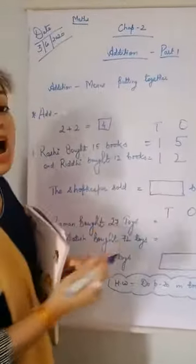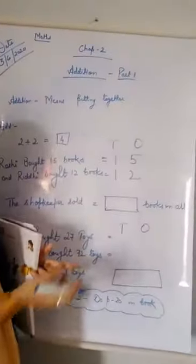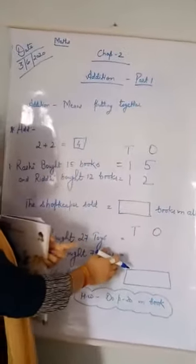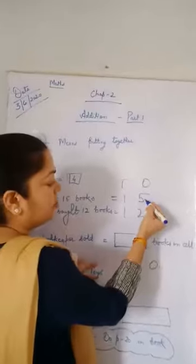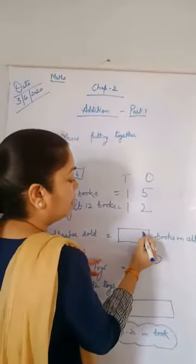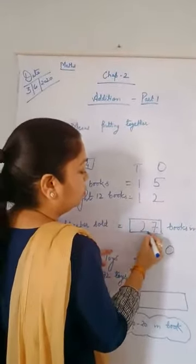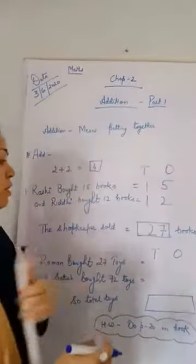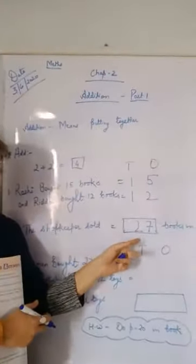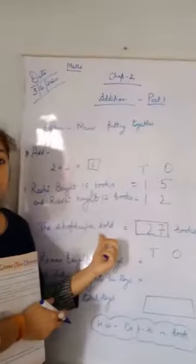The shopkeeper sold how many books? So what we will do? We will just add it. We have to do Addition. 5 plus 2, what will come here? 7. And 1 plus 1? 2. So how many books total? 27. The shopkeeper sold 27 books.